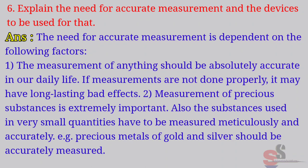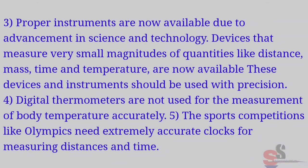Second, measurement of precious substances is extremely important. Also, the substances used in very small quantities have to be measured meticulously and accurately. For example, precious metals of gold and silver should be accurately measured. Third one, proper instruments are now available due to advancement in science and technology.